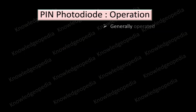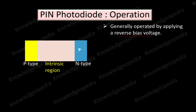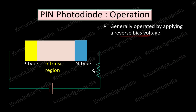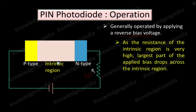The PIN photodiode generally operates by applying a reverse bias voltage. In our PIN photodiode with P-type, N-type, and intrinsic regions, applying reverse bias means the P-type is connected to the negative terminal of the source and the N-type is connected to the positive terminal. R_L is the load resistance across which we take the output.